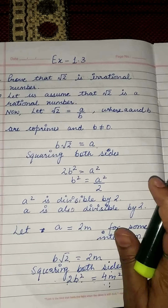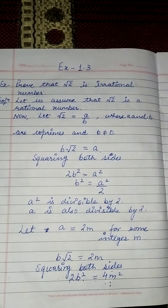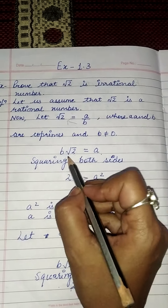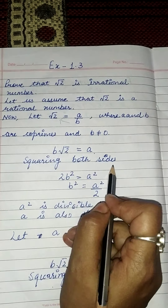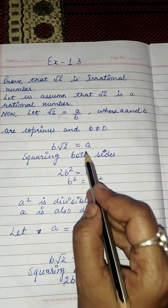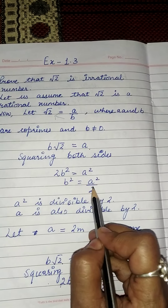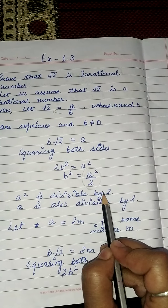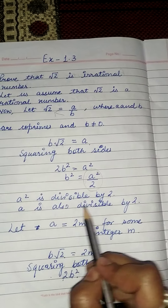So b under root 2 is equal to a, by cross multiplication. Now, to remove the under root sign, we will square both sides. On squaring both sides, under root 2 becomes 2, b becomes b square, and a becomes a square. So 2b square equals a square, meaning a square is divisible by 2. If a square is divisible by 2, then a is also divisible by 2.